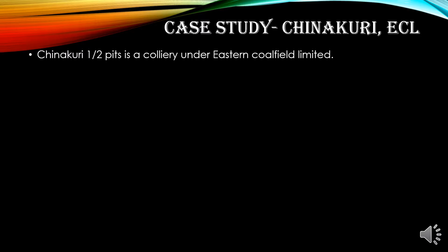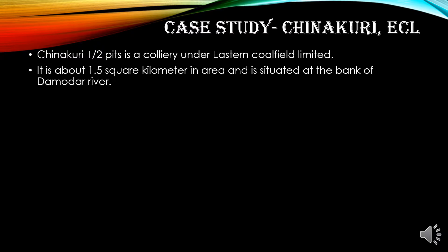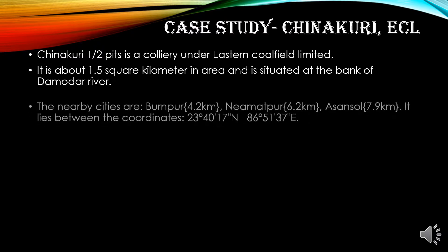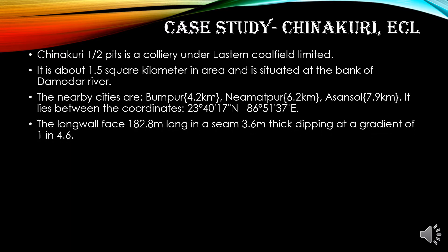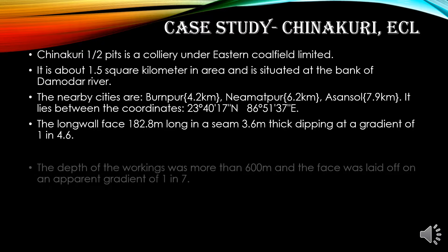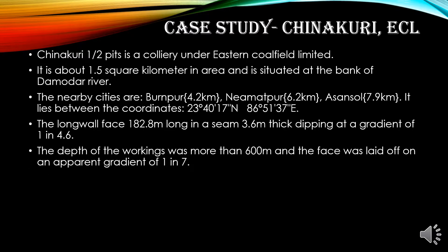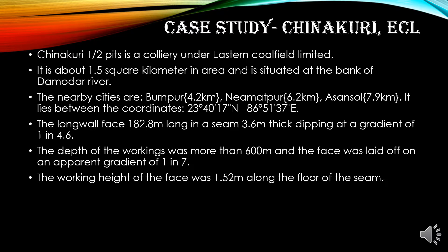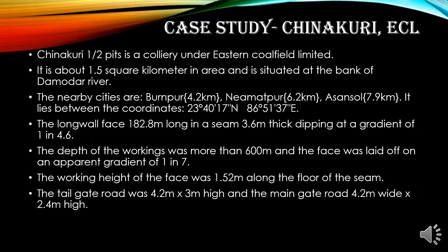Case Study: Chinakuri ECL. Chinakuri is under Eastern Coalfields Ltd. It is situated on the bank of the Damodar River and is about 1.5 sq km in area. Nearby cities are Burnpur, Asansol, and Niamatpur. The longwall face is 182.8 m long and 3.6 m thick, dipping at a gradient of 1 in 4.6 m. The depth of working is more than 600 m and the face was laid at a gradient of 1 in 7. The working height of the face was 1.52 m along the floor of the seam. The tailgate road was 4.2 m wide and 3.0 m high, and the main gate road was 4.2 m wide and 2.4 m high.